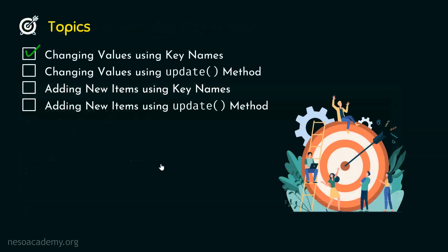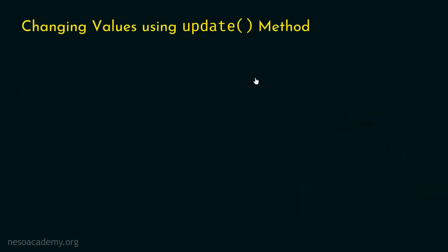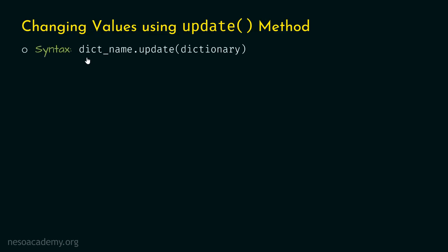Now let's move on to the next topic: changing values using the update method. We can use the update method to change any value of a key. For this, we follow this syntax: first, type the name of the dictionary, then dot, then update, and within parentheses we need to specify a dictionary. We will understand this with the help of an example.